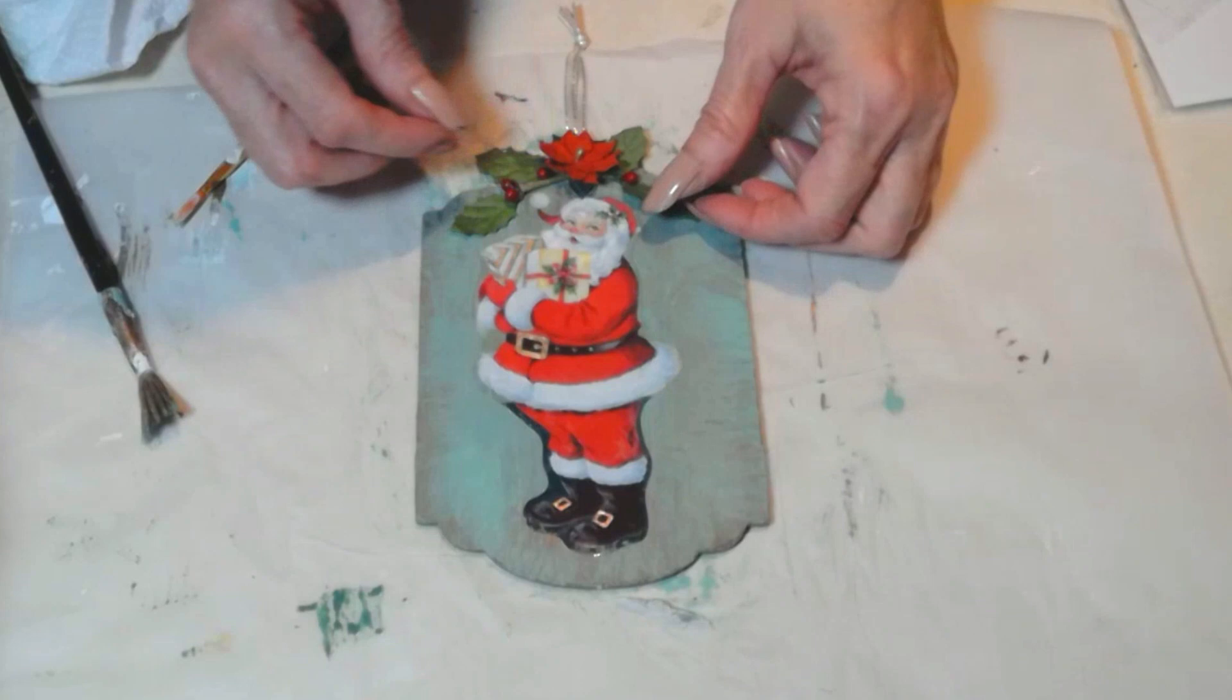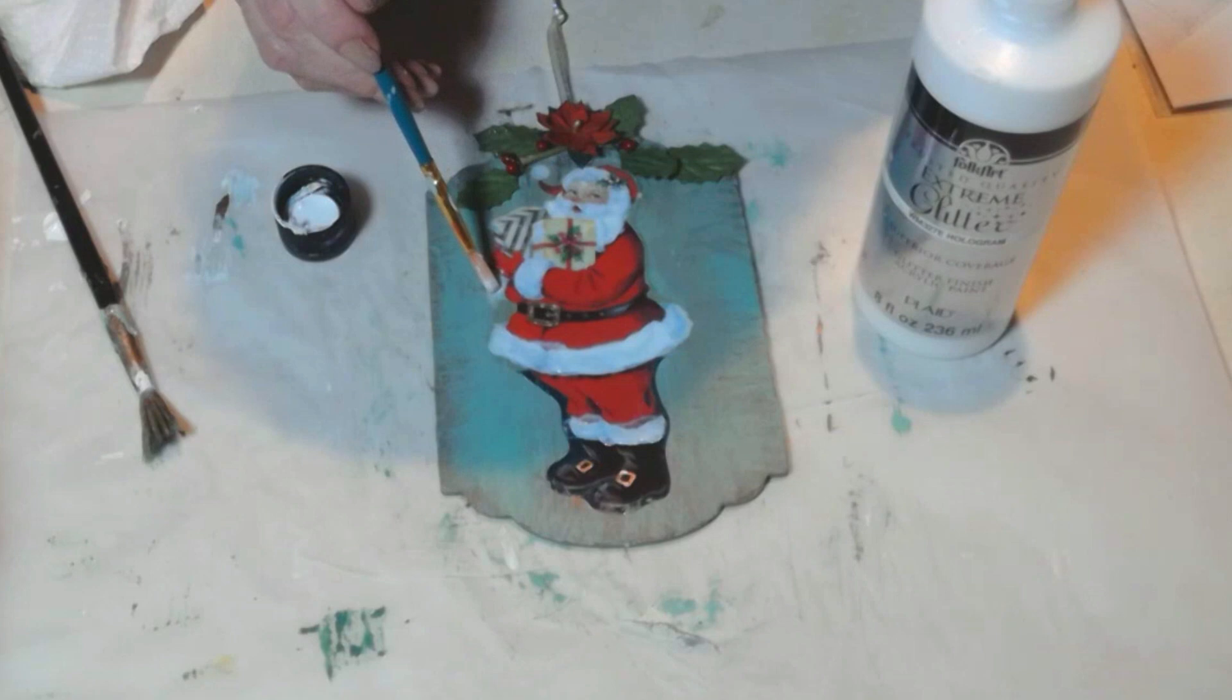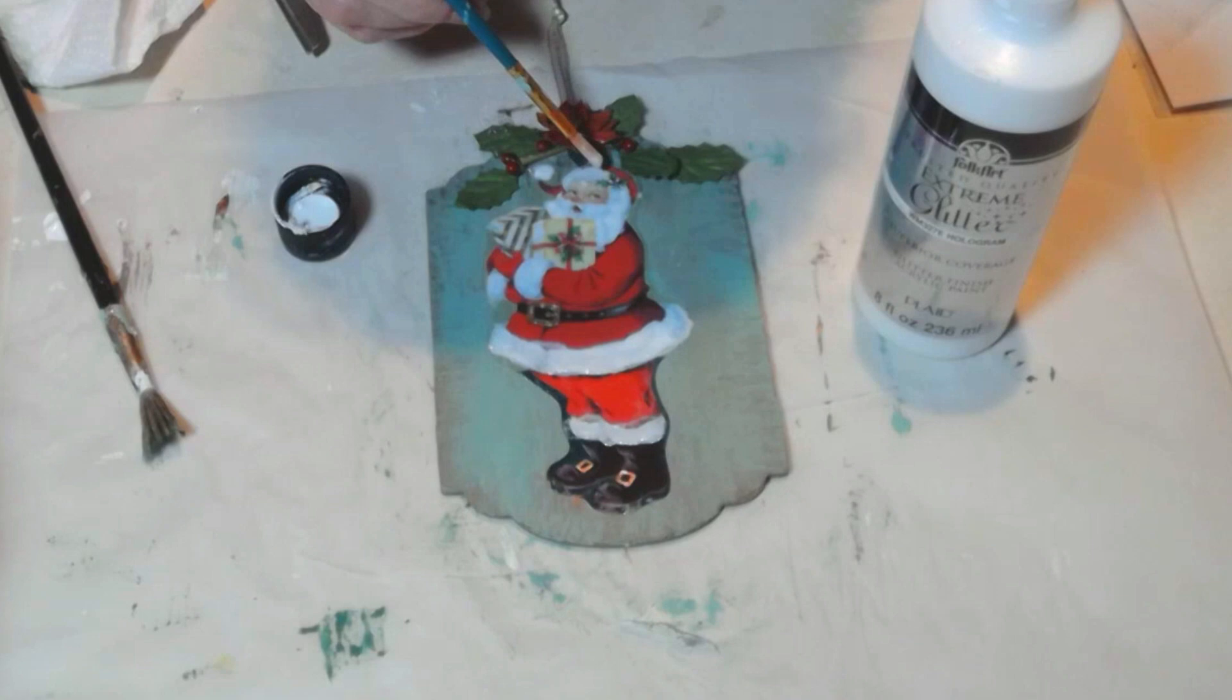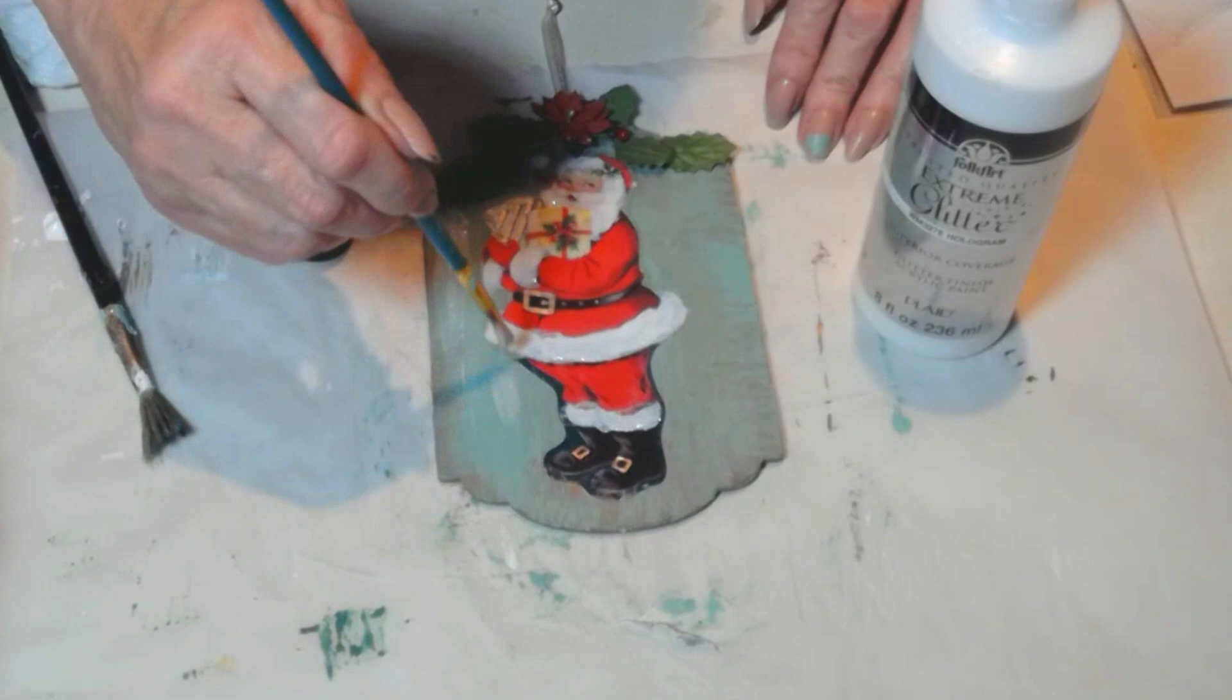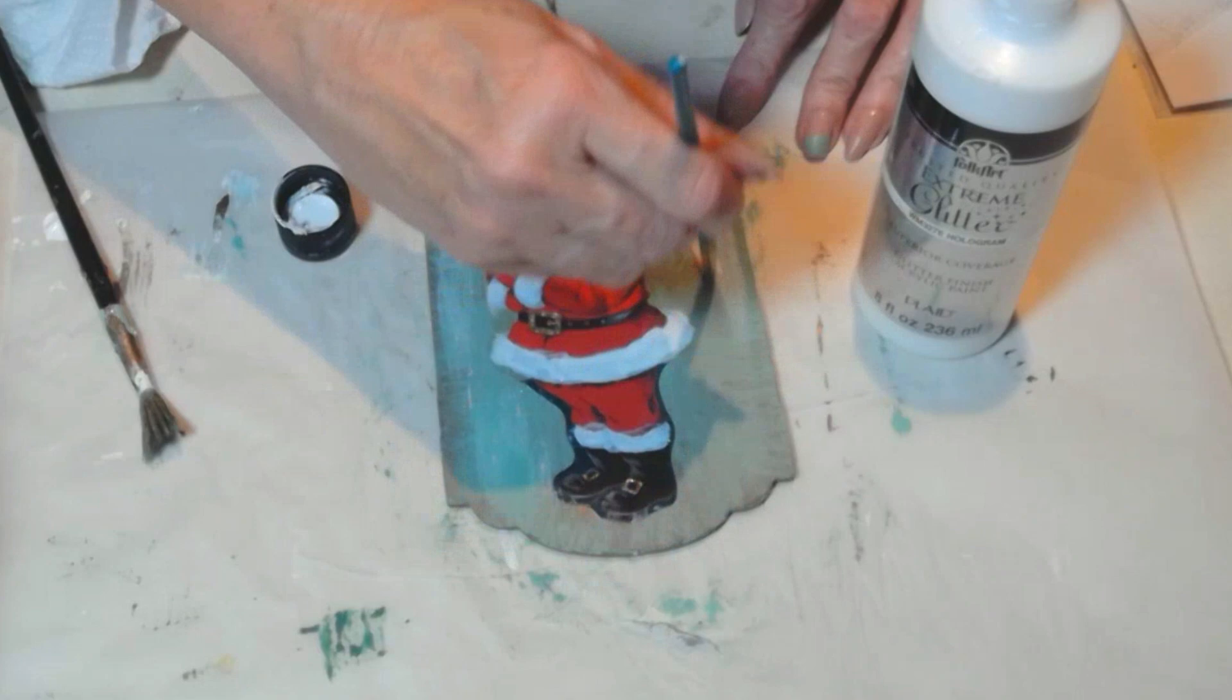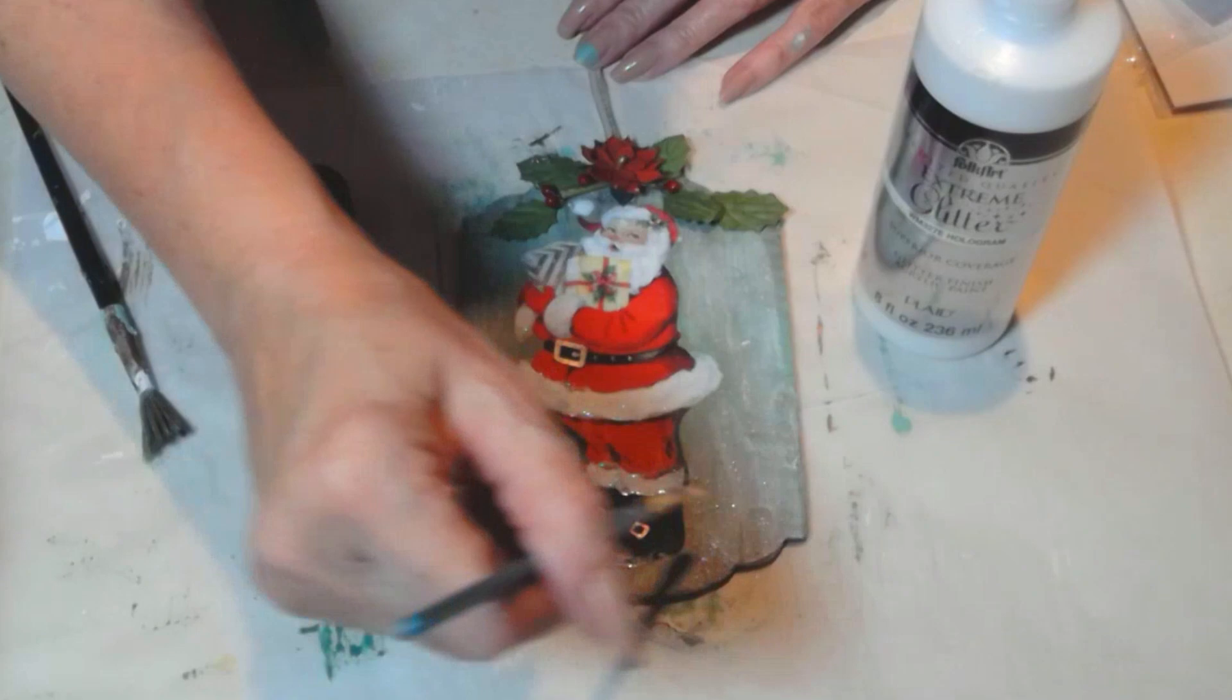But wait there's more. I have my extreme glitter from Folk Art and it's Christmas time so why not? And it's not going to get any glitter in my eyes. So I decided to add this beautiful glitter embellishment to all the white areas, the furry white areas of the Santa Claus. It's not too much glitter but just enough to remind you it's Christmas time. So I hope you try this out for yourselves and save some money by the double usage of a little Halloween sign.